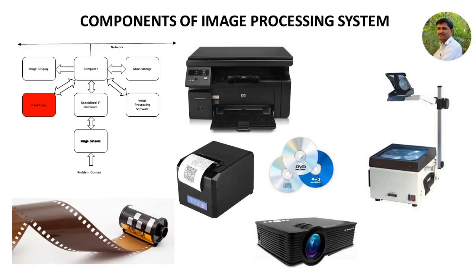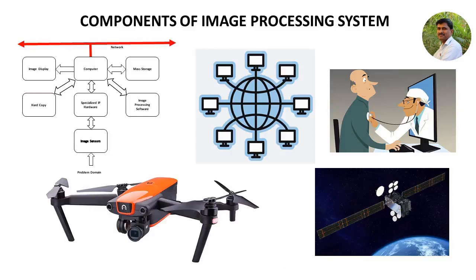Hard copy devices include laser printers, film cameras, thermal printers, inkjet printers, CDs, DVDs, etc., and are used to make hard copies of the images. Film provides the highest possible resolution because it is analog in nature. Images may also be presented using OHPs or LCDs. Regarding networking, availability of bandwidth is an important factor in image transmission due to the large amount of data inherent in images. Image transmission is a part of the image processing system in satellites, robotics, telemedicine, etc.